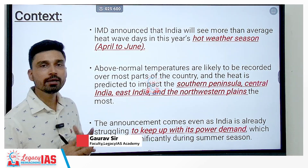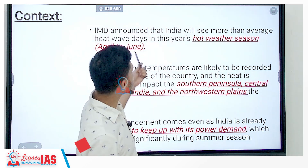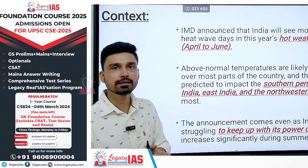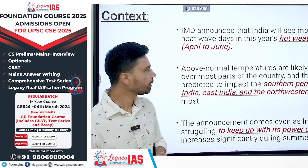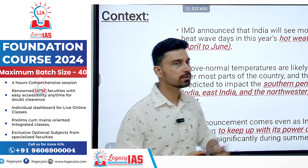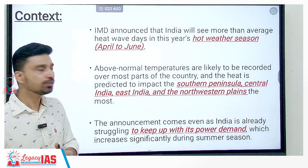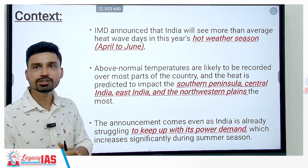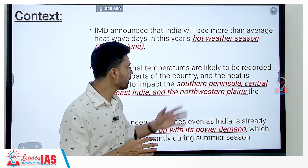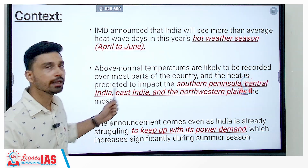To give you the brief context of this issue, IMD, that is the Indian Meteorological Department, has announced that India will see more than the average number of heatwaves this year during the hot weather season that lasts between April to June. Above normal temperatures are likely to be recorded over most parts of the country, impacting southern peninsular regions, central India including Madhya Pradesh, Chhattisgarh, Maharashtra, eastern India around the Chota Nagpur Plateau, and the northwestern plains from Gujarat and Rajasthan all the way up to Punjab and Haryana.